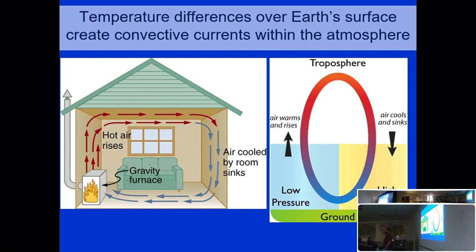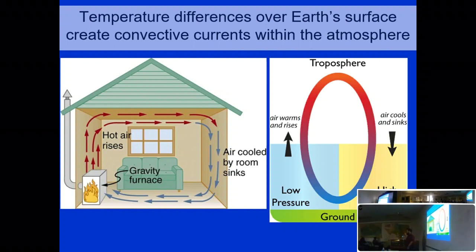When hot air rises in the atmosphere, it will cool, and as it cools it will condense, and as it condenses it will cause precipitation. So rising air causes precipitation. Sinking air causes things to actually get hotter and drier.